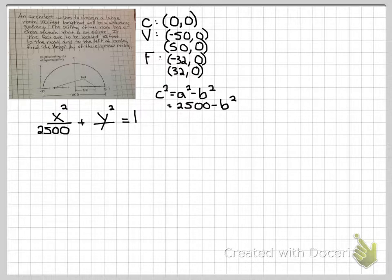And since the foci are 32 to the left and to the right, 32 squared is 1024. So do a little math to find b squared.